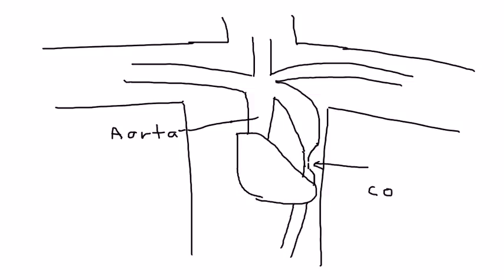That is known as a coarctation. This coarctation has some very significant consequences. Remember the heart is pumping blood out into the aorta and the blood then goes into the branches to the neck, to the arms, and then eventually down through the descending aorta. If there's a narrowing here that has some very specific consequences.